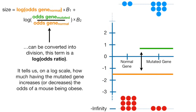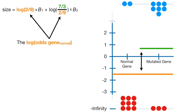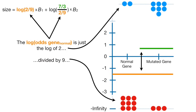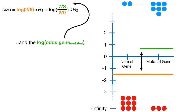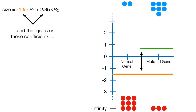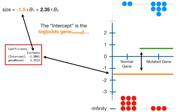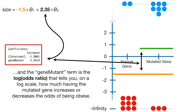Since subtracting one log from another can be converted into division, this second term is a log of the odds ratio. It tells us, on a log scale, how much having the mutated gene increases or decreases the odds of a mouse being obese. The log of the odds for gene normal is the log of 2 divided by 9, and the log of the odds for gene mutated is the log of 7 divided by 3. Doing the math gives us the coefficients that you get when you do logistic regression. The intercept is the log of the odds for gene normal, and the gene mutant term is the log of the odds ratio.